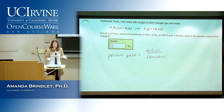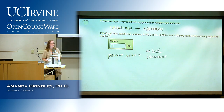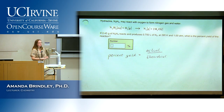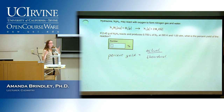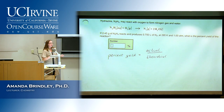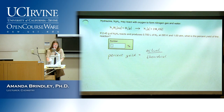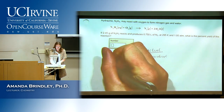We have to figure out two things: the actual yield — how much we made — and the theoretical yield — how much we could have made if every bit of it reacted with no loss and no side reactions.